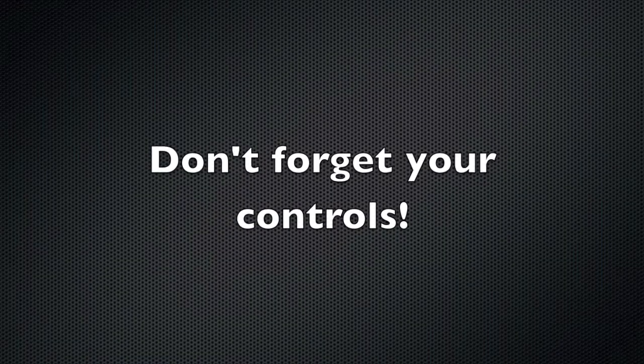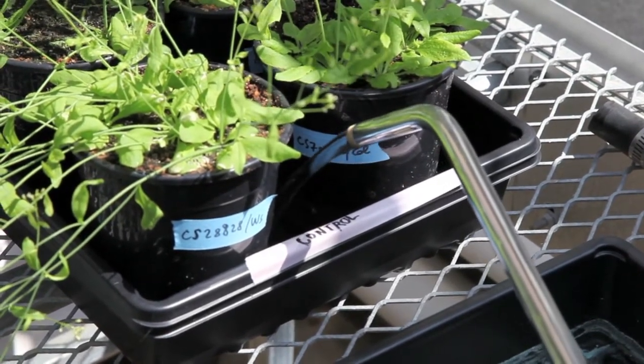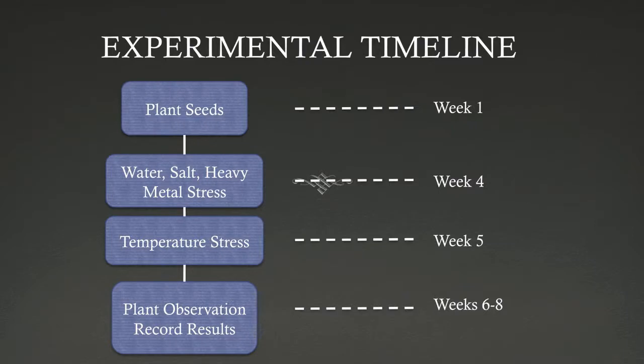Make sure to not forget your controls. Keep them in normal growing conditions and remember to water them regularly. They will be critical in analyzing your results later on. For the next couple of weeks, observe your plants looking for the effect of your treatments. These effects should be most obvious around week 7 to 8.